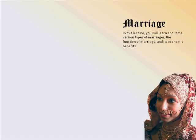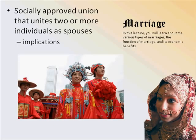For instance, among certain groups in India, women have a series of relationships with men, and her brothers act as fathers to her children, including bearing the cost to raise them, even if they acknowledge the biological father. If we're going to define marriage, we could refer to it as a socially approved union that unites two or more individuals as spouses. The implications include some kind of sexual union, some permanence, a common residence, and we'll also talk about residence patterns.